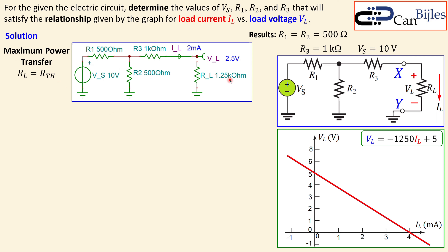In the simulation, the load resistor is first set equal to the Thevenin resistance for the maximum power transfer case. The circuit shows R1, R2, VS, and R3, with a current arrow measuring the branch current and a voltage meter at the node. We see two milliamps and 2.5 volts. This makes sense: the Thevenin equivalent has an open-circuit voltage of 5V, and a matched load gives half that voltage — 2.5 volts.